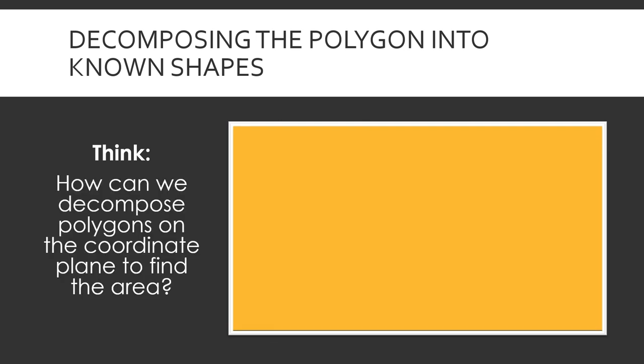Polygons on a coordinate plane, let's go ahead and turn to our friends at Pearson. As you watch, think about how you can decompose polygons into shapes that you might be more familiar with in order to find the area of polygons on a coordinate plane. Remember, the area of a rectangle can be found by multiplying your length times your width. Take it away, Pearson.